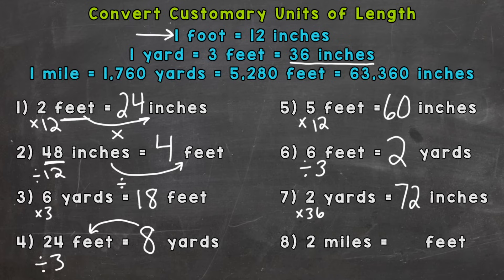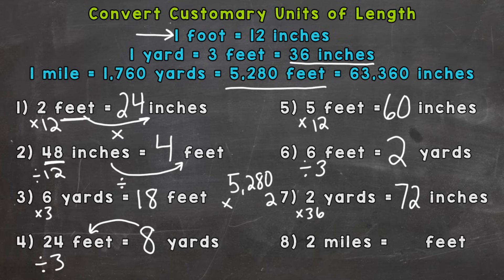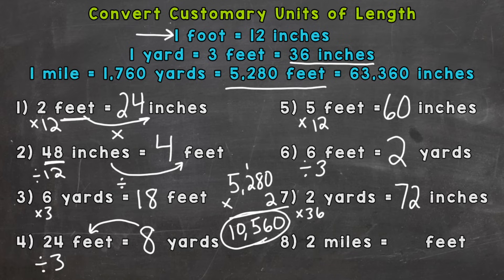And lastly, two miles to feet. One mile equals 5,280 feet, so we have two groups of that: 5,280 times two, or 5,280 plus 5,280, which gives us 10,560 feet.